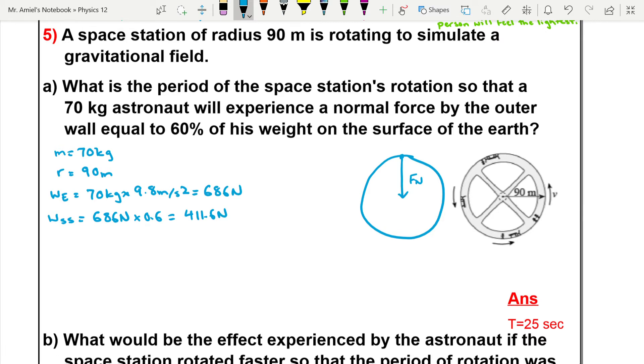So knowing that, we can go ahead and use our equation for centripetal force: F_c equals 4π² r m (radius times mass) all over the period squared. So we'll do a little bit of algebra here and we'll rearrange this.